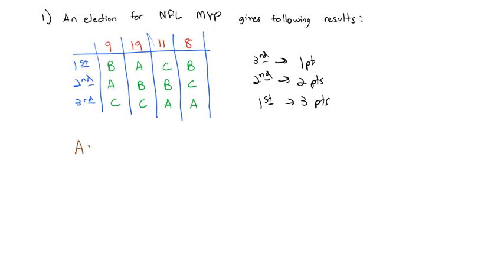Looking at candidate A, first time candidate A came in second place. Second place is worth two points, and there were nine votes for second place. In addition to that, A came in first place. First place is worth three points times the 19 votes. In addition to that, we see A is in third place. Third place is worth one point times those 11 votes, plus we see A is in third place, one point times the eight votes. And remember with order of operations, the multiplication has to happen first. And so we end up with A totaling 94 points.